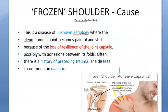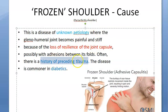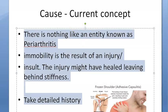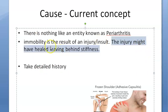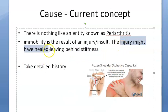In the exam, if asked about the cause of frozen shoulder or adhesive capsulitis, you will say the cause is unknown, or there could be a history of preceding trauma. These patients are usually diabetics, which is why it's called a disease of the 50s. The current concept is there is immobility because of an injury or insult, and this injury may have healed, leaving behind stiffness - so you should take a detailed history.